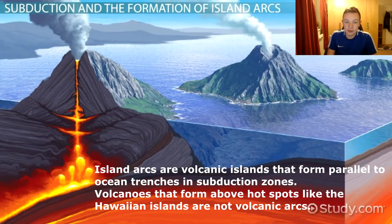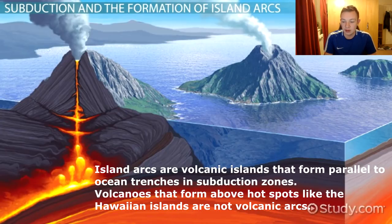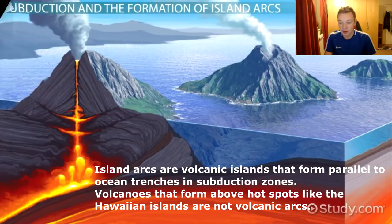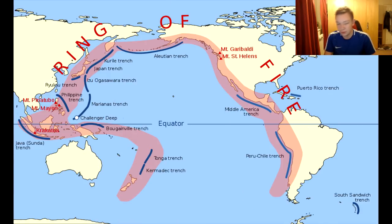Island arcs are volcanic islands that form parallel to ocean trenches and subduction zones. Volcanoes that form at hotspots, such as the Hawaiian Islands, are not volcanic arcs.